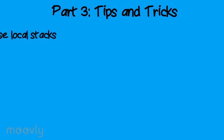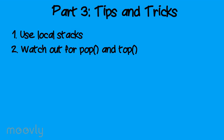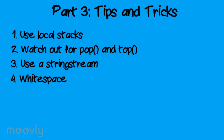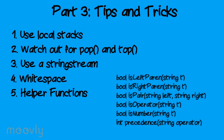Part 3: Tips and Tricks. These are just a few good ideas to help you out with the lab. 1. Use local stacks — declare your stacks inside each function rather than as data members of your class. This will help you keep your stacks clear between function calls. 2. Check your stack size before calling top or pop — calling top or pop on an empty stack will cause a segmentation fault every time. 3. Use a string stream to convert between integers and strings, especially when evaluating a function. 4. Keep an eye on white space in returned strings — a common error is returning an expression with an extra space at the end. 5. Use helper functions such as isLeftParen, isRightParen, isPair, isOperator, isNumber, and a precedence function to keep your code clean and readable.